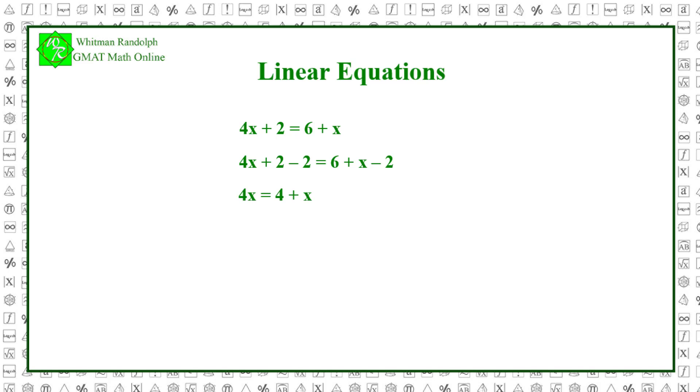Now, if we subtract x from both sides, 4x minus x equals 4 plus x minus x, we get 3x equals 4. So that finally, x equals 4 divided by 3.